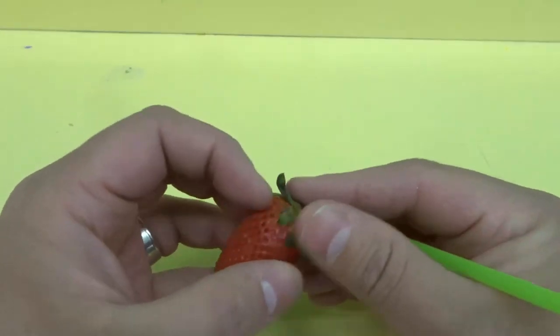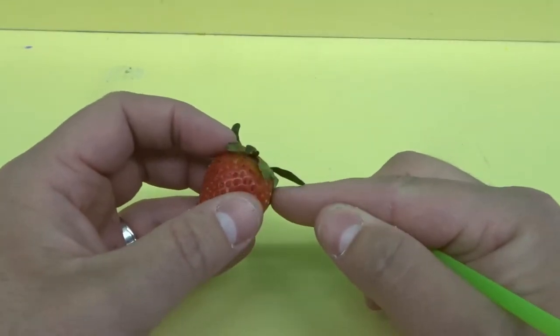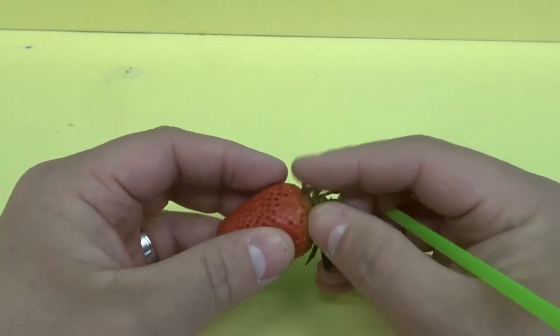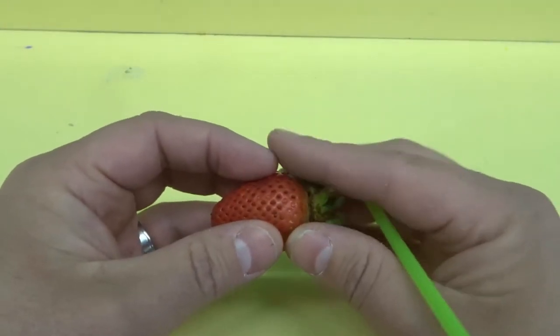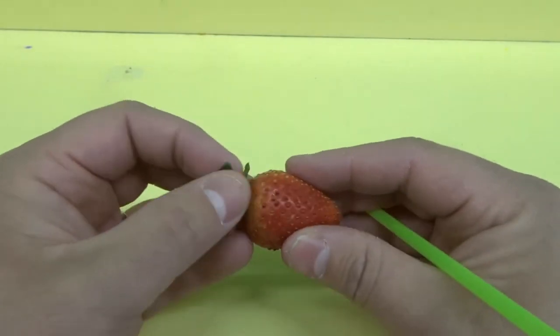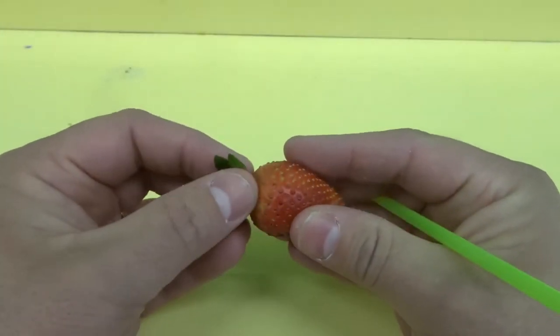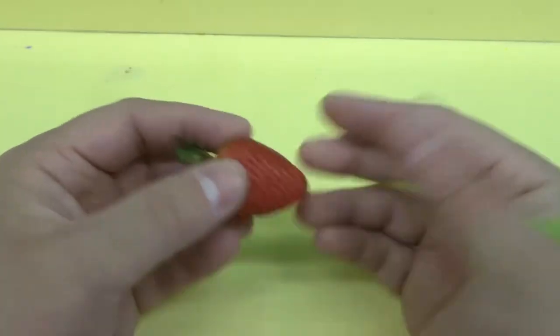Often times when you cut a strawberry, you're likely going to cut off the top and then slice it. A lot of the times we let a lot of this good part of the strawberry go to waste. But by coring the strawberry, you can get rid of the core and the stem while still keeping all of the good part of the strawberry.